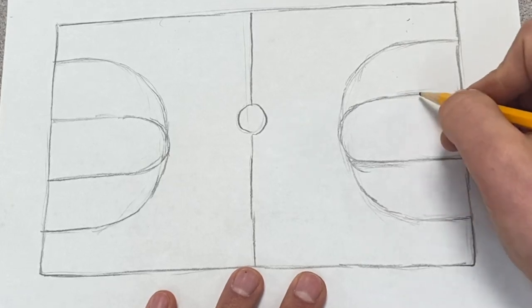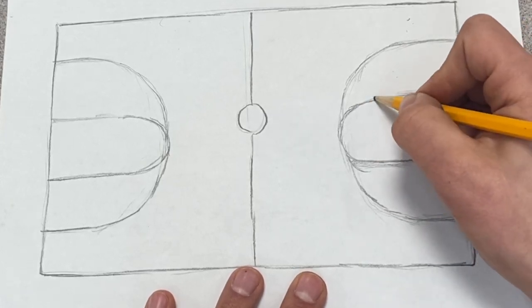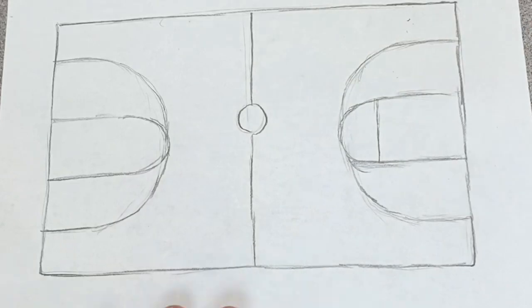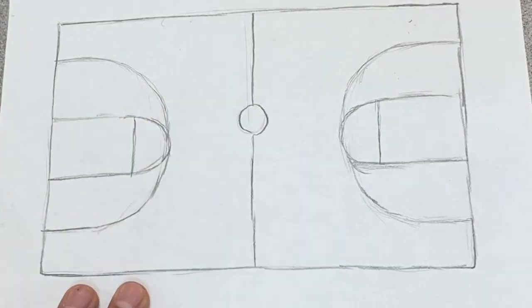Nice, and then do our free throw right when this kind of starts to turn. You want to do your line right across. Line right across here. There we go.